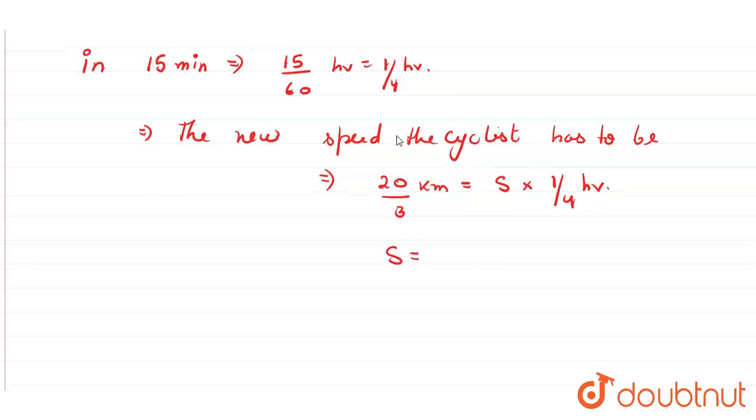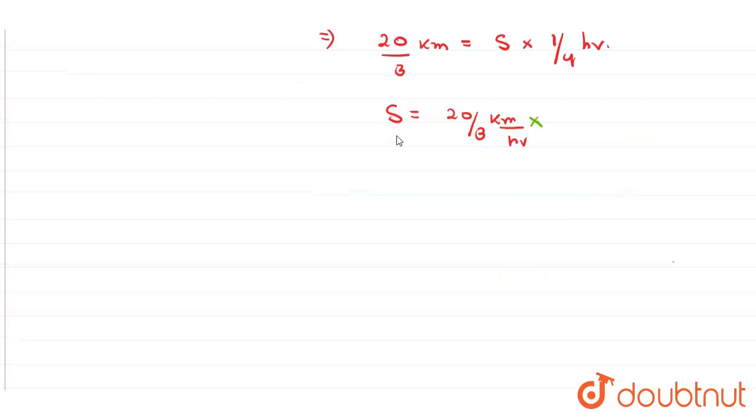the speed comes out to be 20/3 kilometers divided by 1/4 hours. So this comes out to be 20 times 4 is 80, so 80